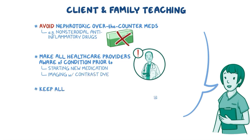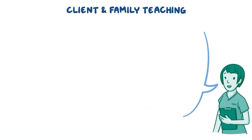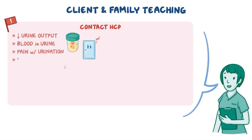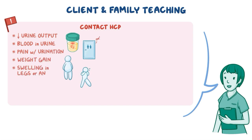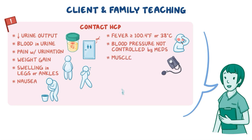Remind them to keep all their follow-up appointments with their nutritionist and health care provider to monitor their progress. Instruct them to contact their health care provider immediately if they experience problems such as decreased urine output, blood in their urine, pain with urination, weight gain, swelling in their legs or ankles, nausea or fever of at least 100.4°F (38°C) or higher, blood pressure not controlled by their medications, muscle weakness, palpitations, or abdominal pain.